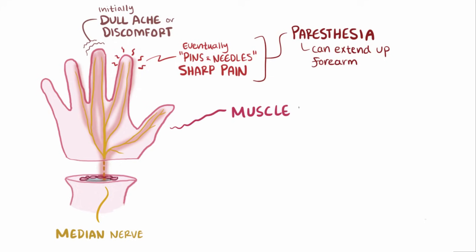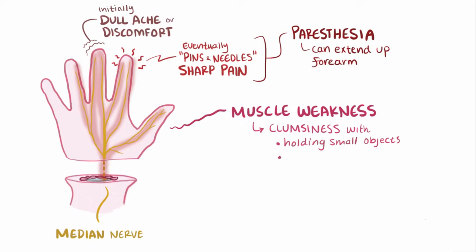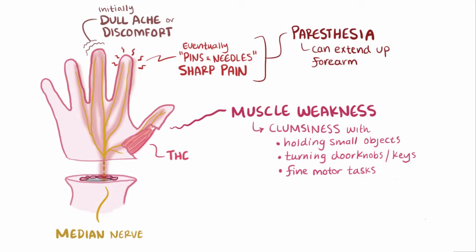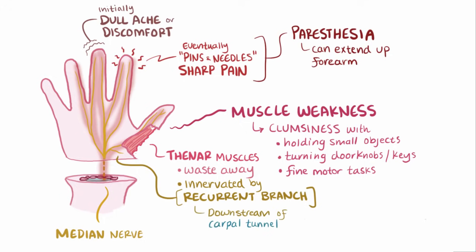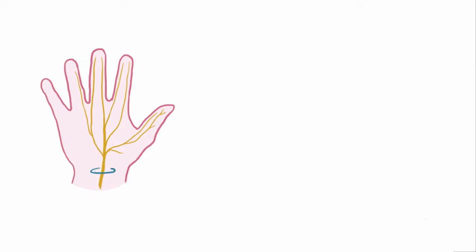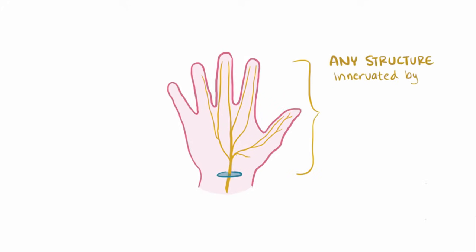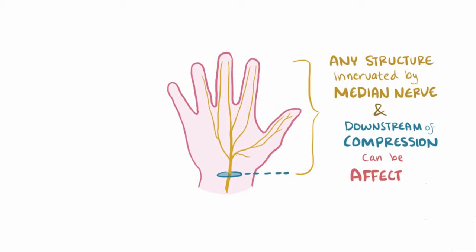People might also have muscle weakness, which can cause clumsiness with tasks like holding small objects, turning doorknobs and keys, or fine motor tasks like buttoning up a shirt. In severe situations, the thenar muscles at the base of the thumb can start to waste away. This happens because those muscles are innervated by the recurrent branch of the median nerve, which arises from the median nerve after it passes through the carpal tunnel. Basically, any structure innervated by the median nerve downstream of the point of compression can be affected.